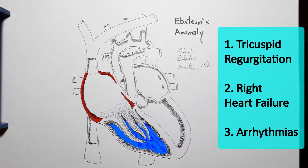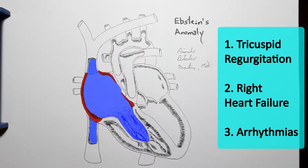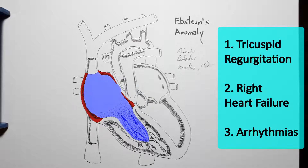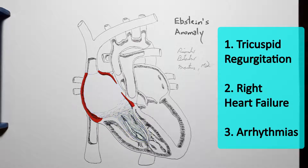And finally, the tremendous stretching of the atrial wall from this massive dilation may damage the conduction system of the heart and is likely to predispose to arrhythmias. A very large proportion of patients will present with at least atrial fibrillation. However, more severe conditions such as Wolf-Parkinson-White are not uncommon.